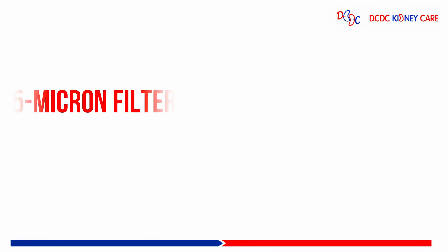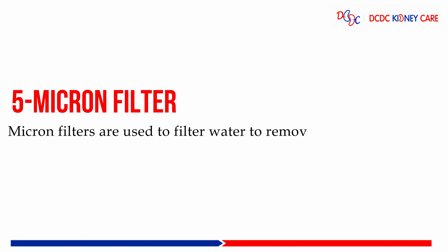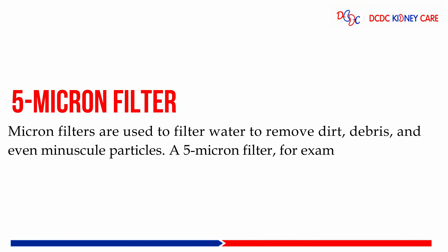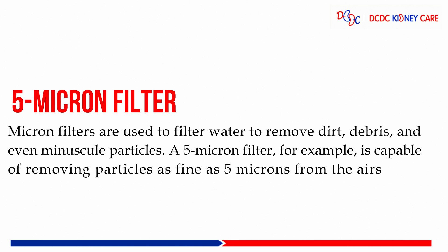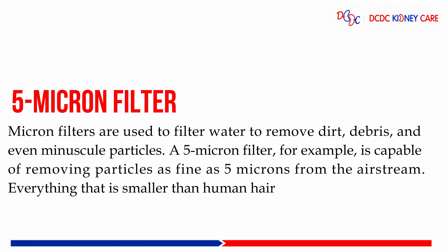Then the 5 micron filter. The 5 micron filter is used to filter water to remove dirt, debris, and even micron particles. A 5 micron filter is capable of removing particles as fine as 5 microns. Everything that is smaller than a human hair goes through the pores.